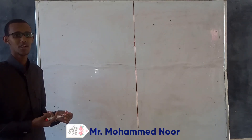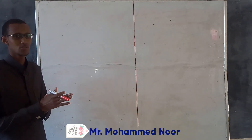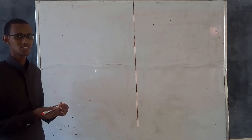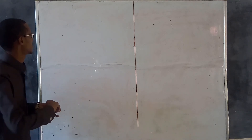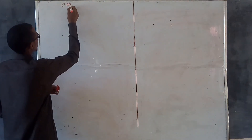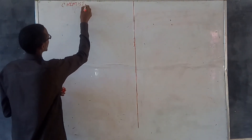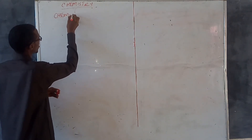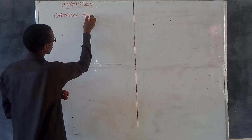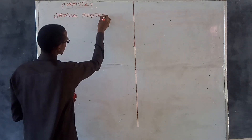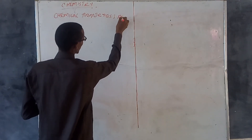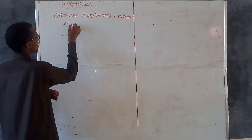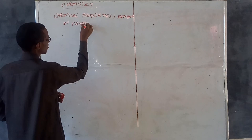Hello students, welcome. Today we want to talk about the topic known as chemical families, patterns and properties. This is the second chapter in Ponzu, that is chemical properties, and we also have to talk about the patterns and their properties as well.